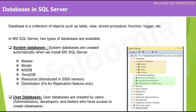System databases are the databases which are automatically created when we install Microsoft SQL Server. Here we installed SQL Server 2019, the latest on-premises SQL Server version available. You can see the list of databases highlighted — these databases were created automatically when we installed Microsoft SQL Server 2019. User databases are created by any user who has permission to create a database — administrators, developers, testers, etc. The highlighted databases are sample databases provided by Microsoft; I just restored them for practice.